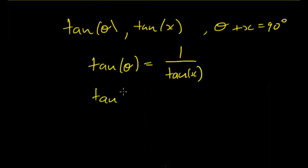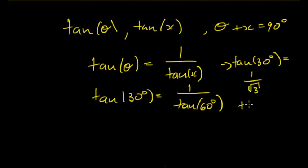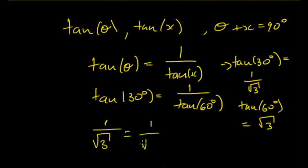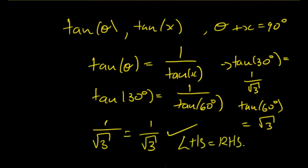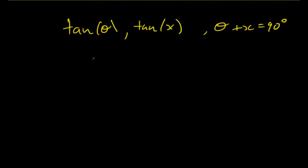So if you have tan 30 degrees, this is equal to 1 over tan 60 degrees. We know that tan 30 degrees equals 1/√3 and tan 60 degrees equals √3, so 1/√3 equals 1/√3 — the left-hand side equals the right-hand side. Also, tan 45 degrees is 1, so 1 equals 1 over 1, which is 1 — that also makes sense.